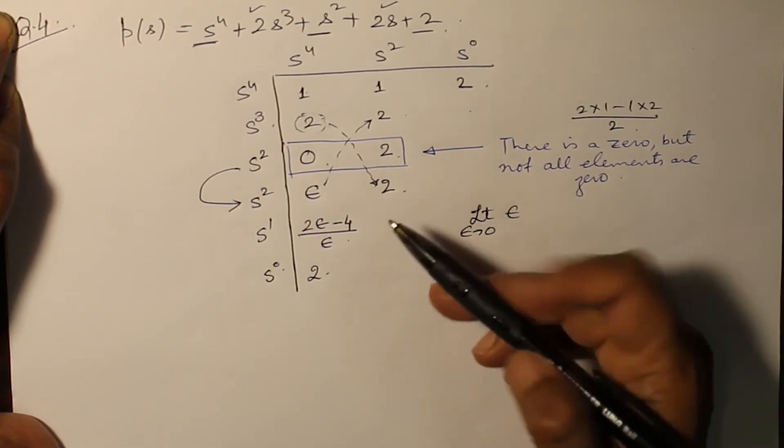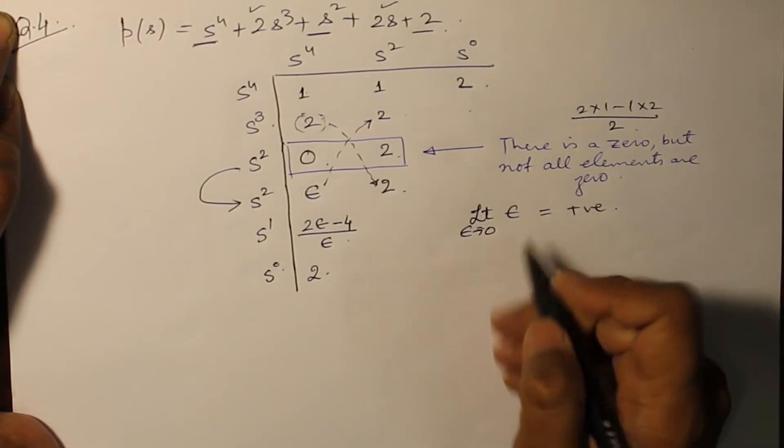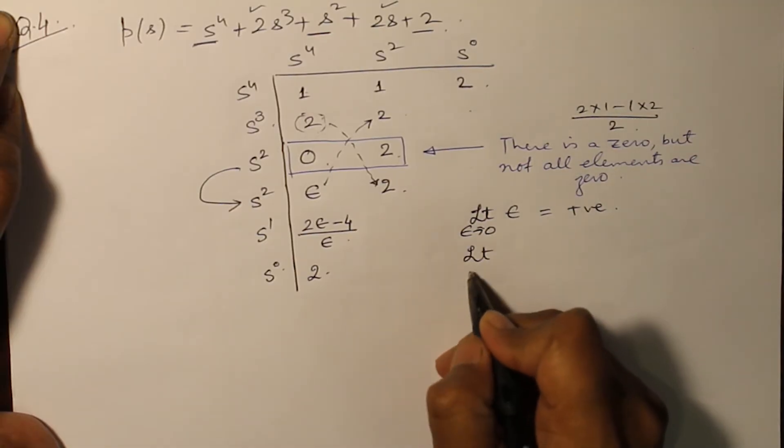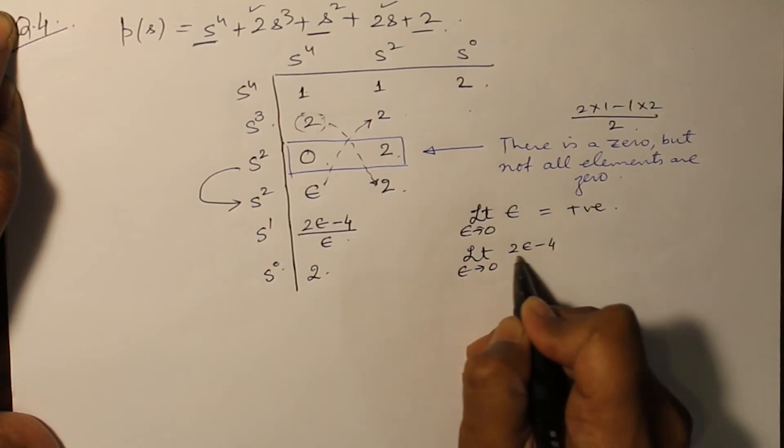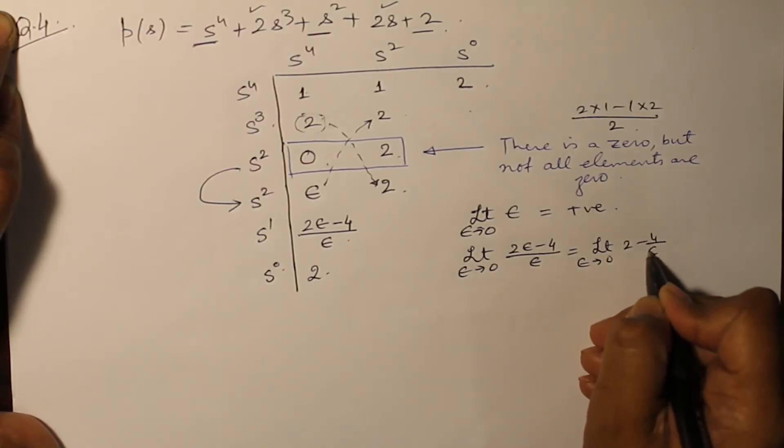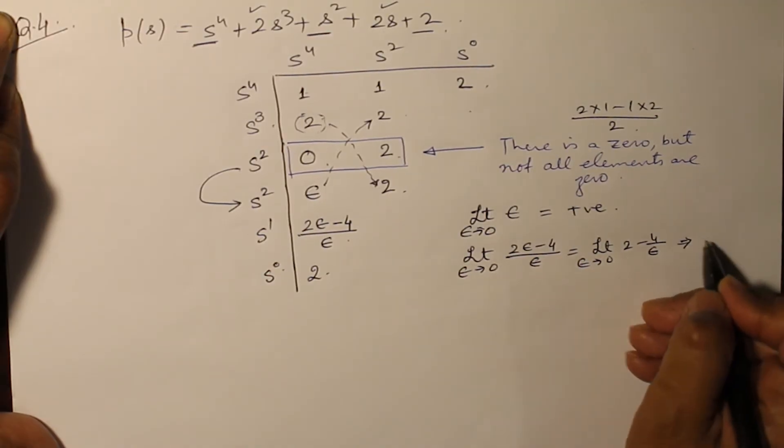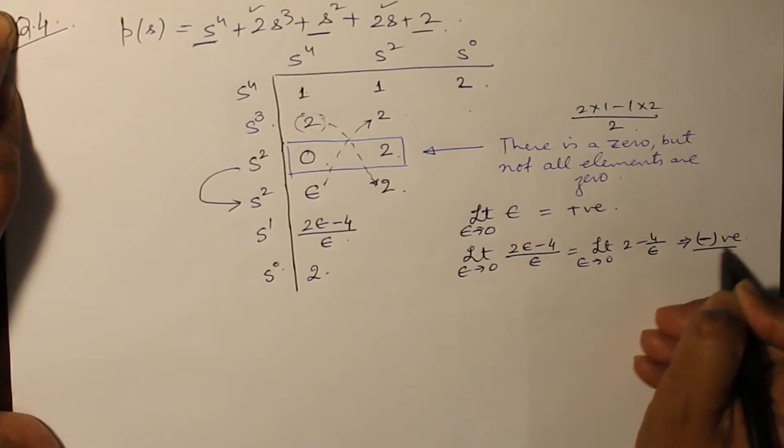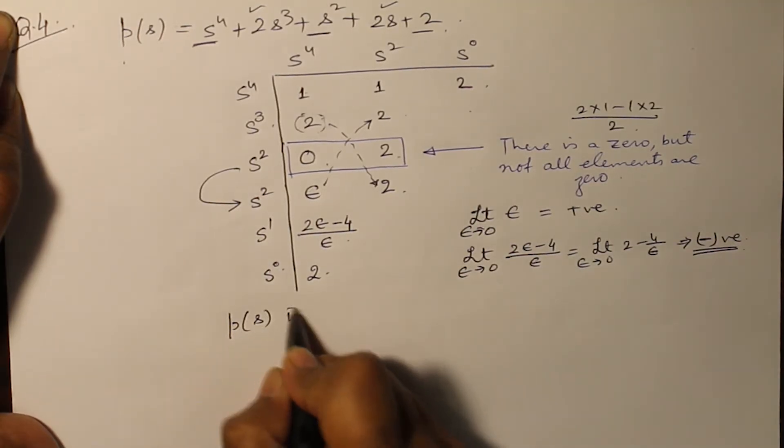As epsilon tends to 0, this is positive. What about limit epsilon tending to 0 of 2 epsilon minus 4 over epsilon? This can be written as limit epsilon tending to 0 - as epsilon tends to 0, this is going to give you minus infinity. So the sign is negative. The moment you have a negative sign, it means that the polynomial p(s) is a non-Hurwitz.